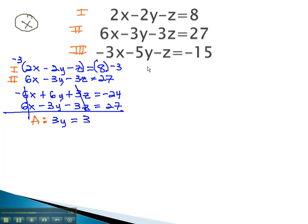So let's do that, using equations 2 and 3. Equation 2 was 6x minus 3y minus 3z equals 27. Equation 3 was negative 3x minus 5y minus z equals negative 15.